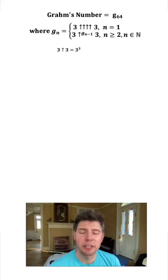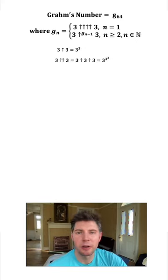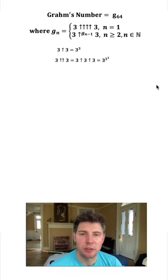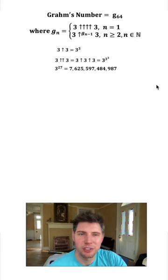3 up arrow 3 is just 3 to the power of 3. And then 3 double up arrow 3 means 3 arrow 3 arrow 3, which is the same thing as 3 to the 3 to the 3. So it's about 7.6 trillion.